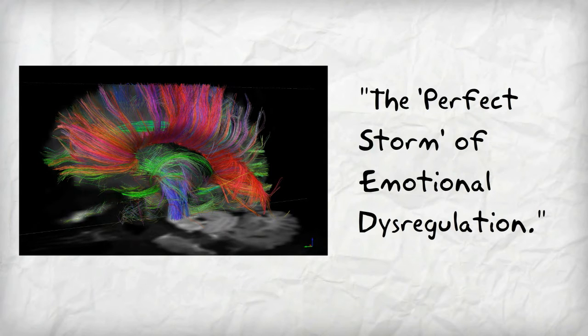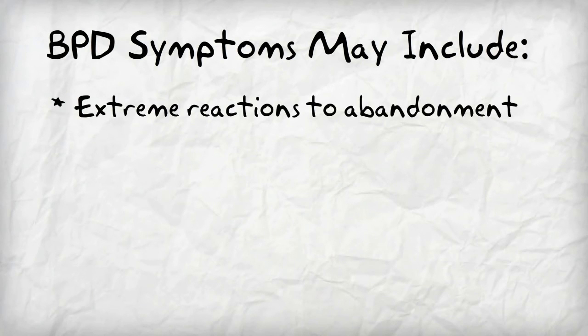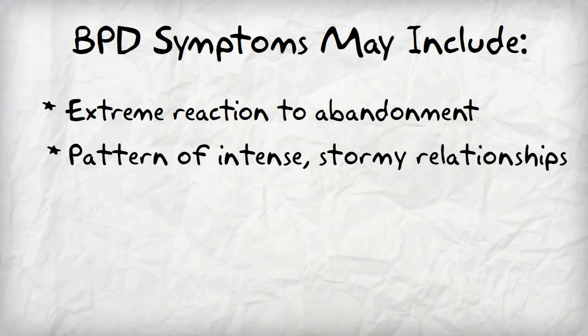The emotional dysregulation issues in the brain lead to BPD symptoms that may include extreme reactions, including panic, depression, rage, or frantic actions to abandonment, whether real or perceived. A pattern of intense and stormy relationships with family, friends, and loved ones, often veering from extreme closeness and love to extreme dislike or anger.